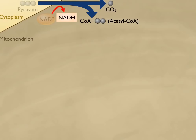During the conversion of pyruvate to acetyl-CoA, carbon dioxide (CO2) is produced and a molecule of NADH is formed. The two-carbon acetyl portion of the acetyl-CoA is transferred to a four-carbon molecule,